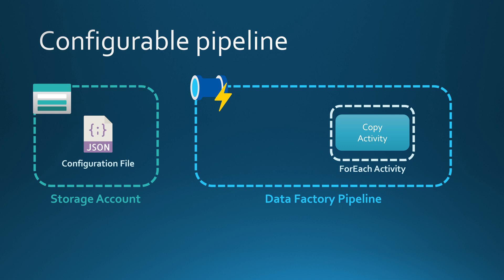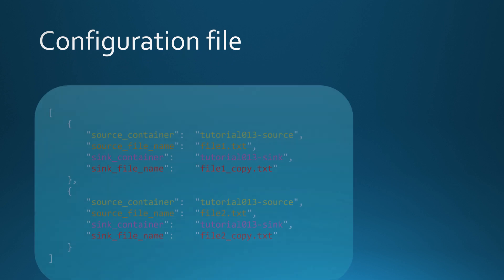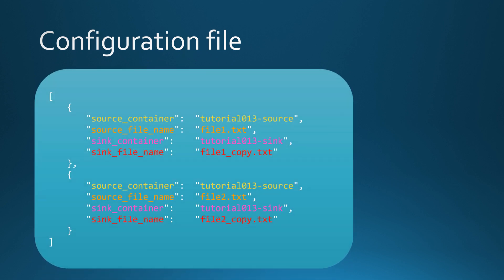To get that configuration content into our pipeline, we are going to use the lookup activity to fetch the contents of that JSON file and then pass them to our ForEach activity, which will then pass it down to our copy activity to handle the copy. Now let's check out how that configuration file looks. Basically, in that configuration file we would have an array with some objects inside it — in this case, two objects in the array.